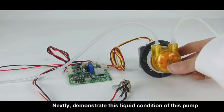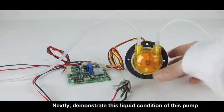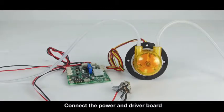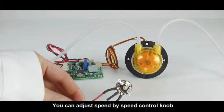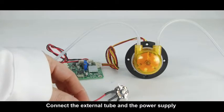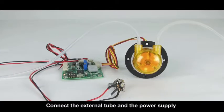Next, I'll demonstrate the liquid pumping condition of this pump. Connect the power and driver board. You can adjust the speed by the speed control knob. Connect the external tube and the power supply.